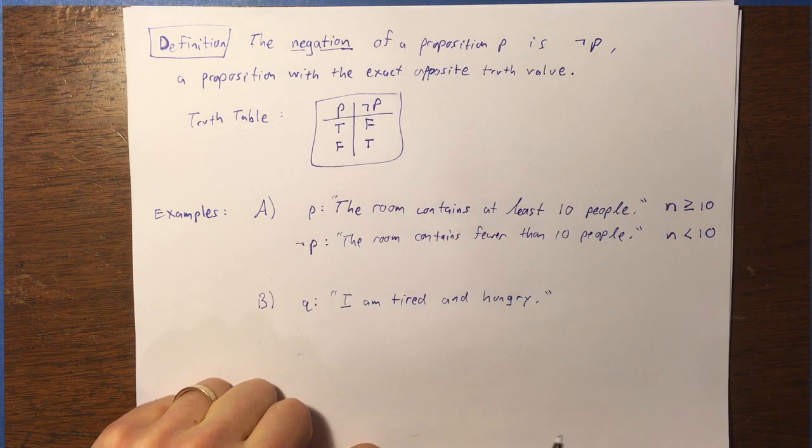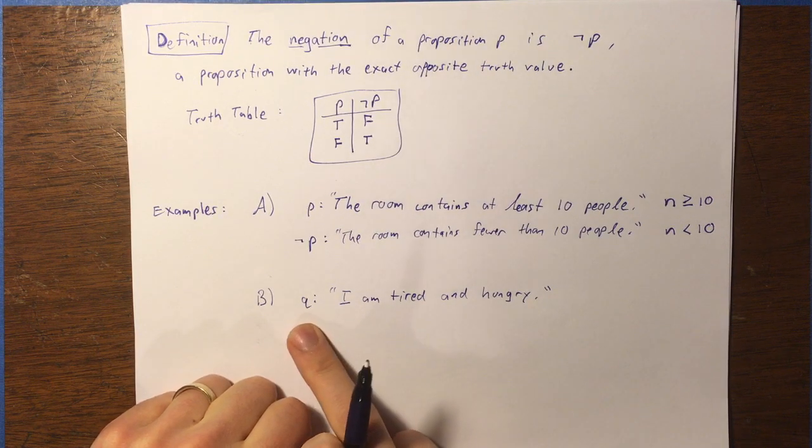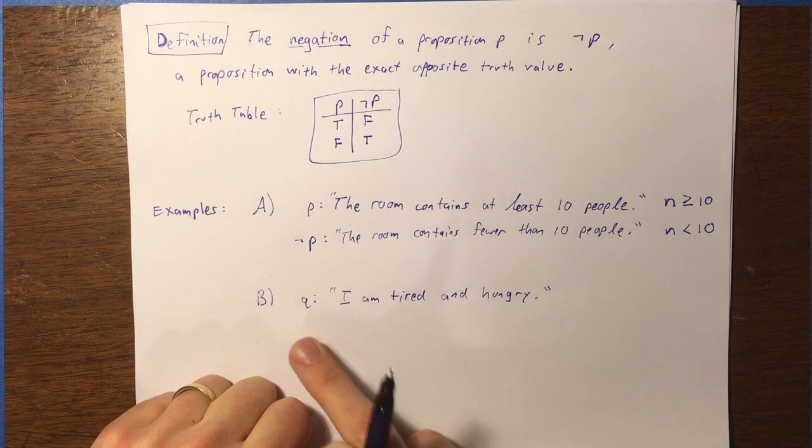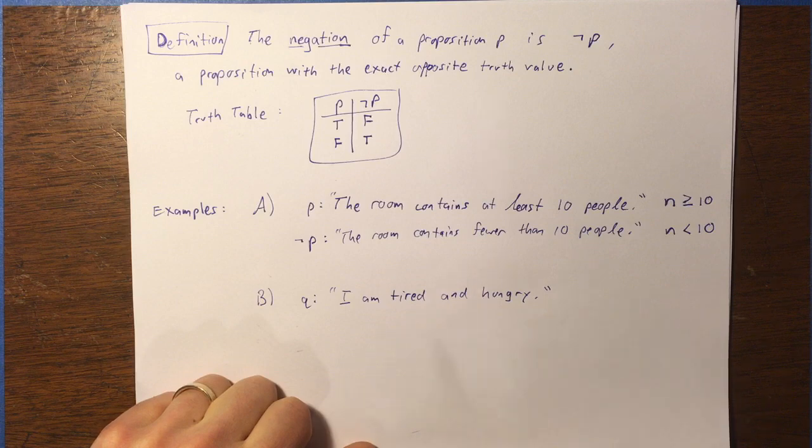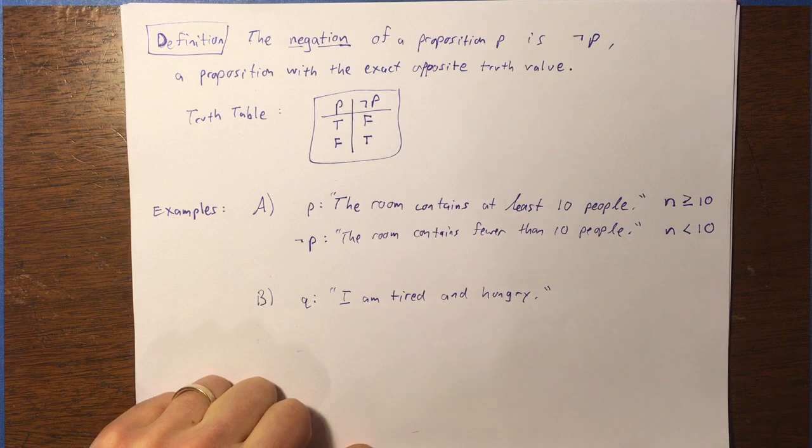Let's look at another example. This one's a little more complicated. This time the proposition is Q: I am tired and hungry. Now, we need to figure out what the opposite of that would be. Not the opposite. Let's use correct words. The negation.